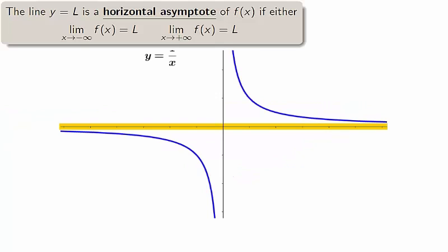A horizontal asymptote to a function f is a horizontal line y equals l, where l is the limit of f as x approaches either positive or negative infinity.